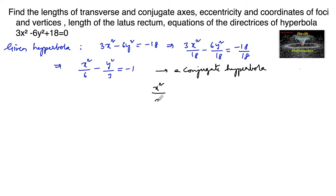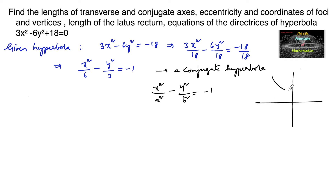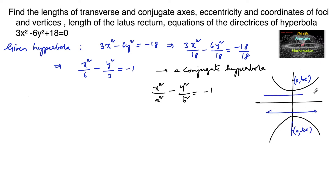The conjugate hyperbola is in the form x²/a² minus y²/b² equals minus 1, where its foci are taken as (0, ±be) and its directrices are y equals b/e and y equals minus b/e.